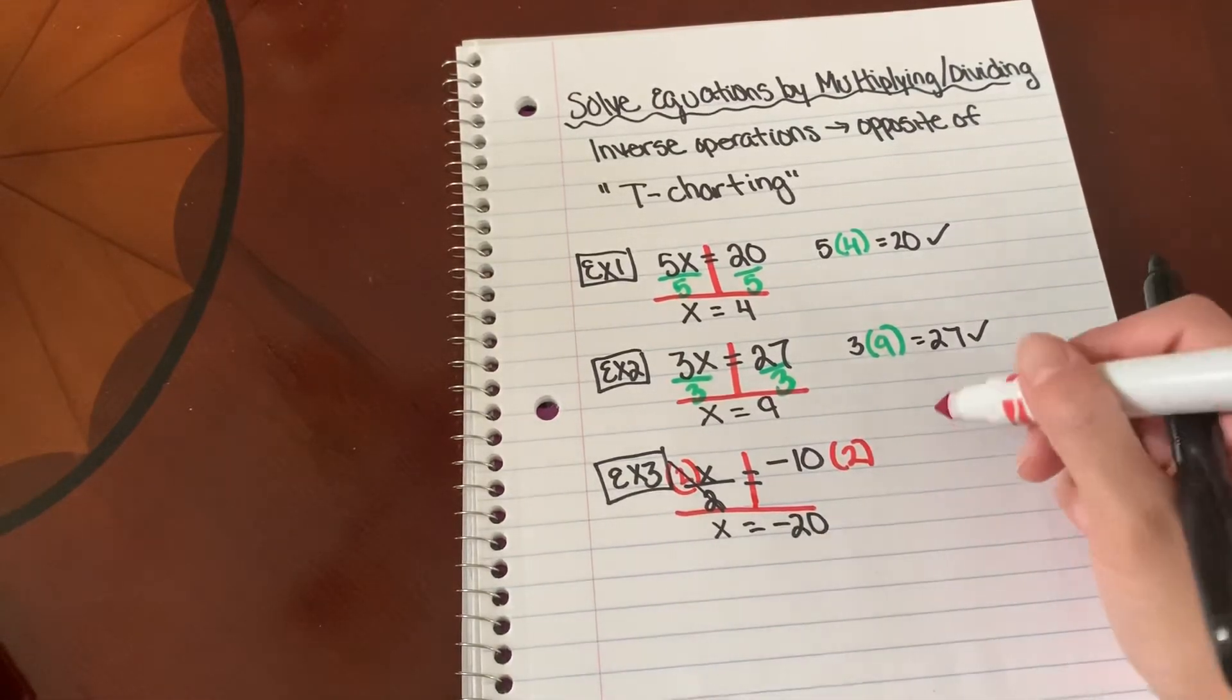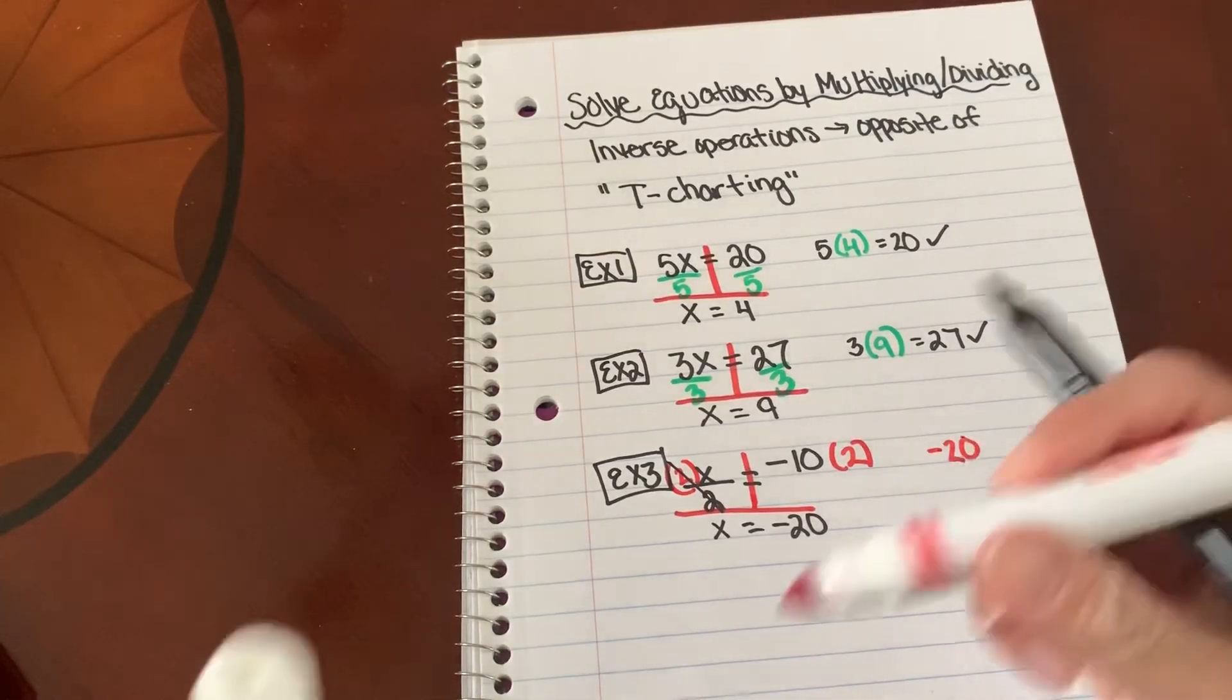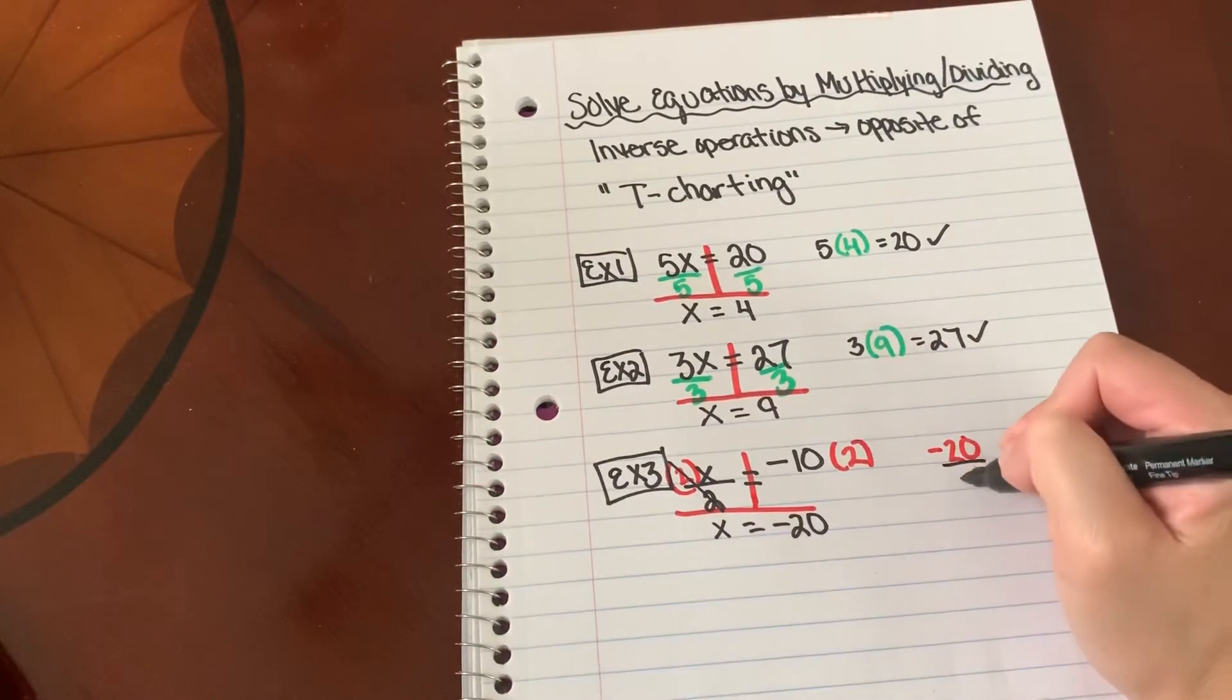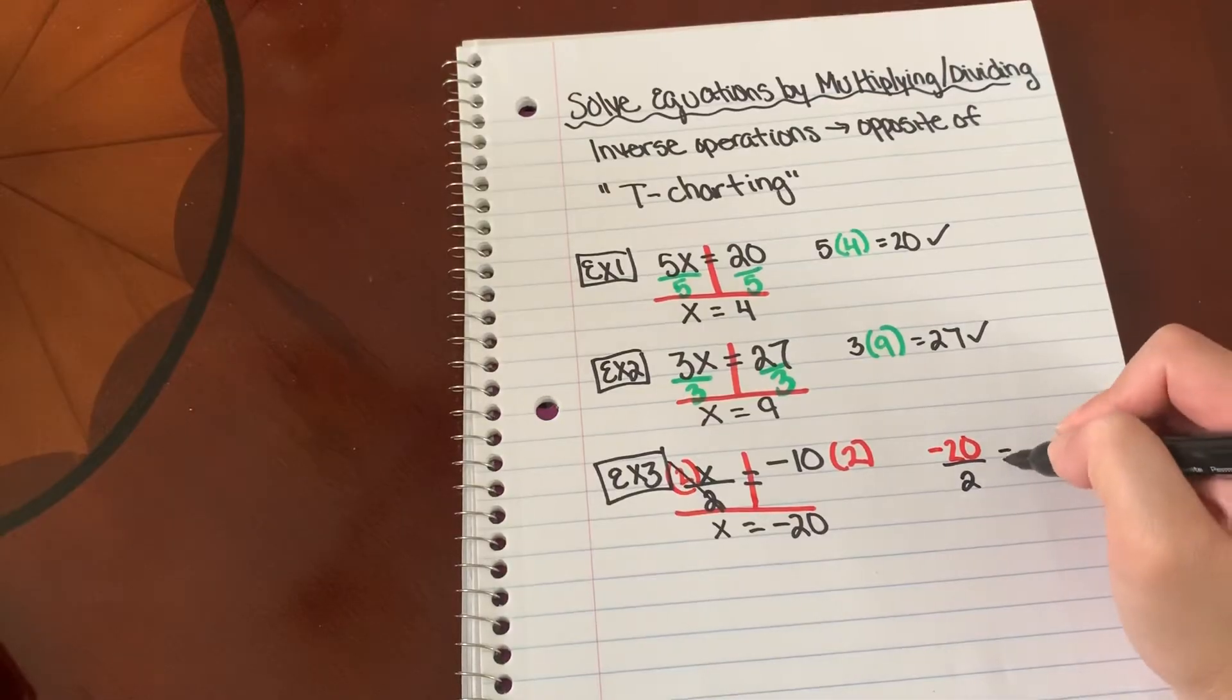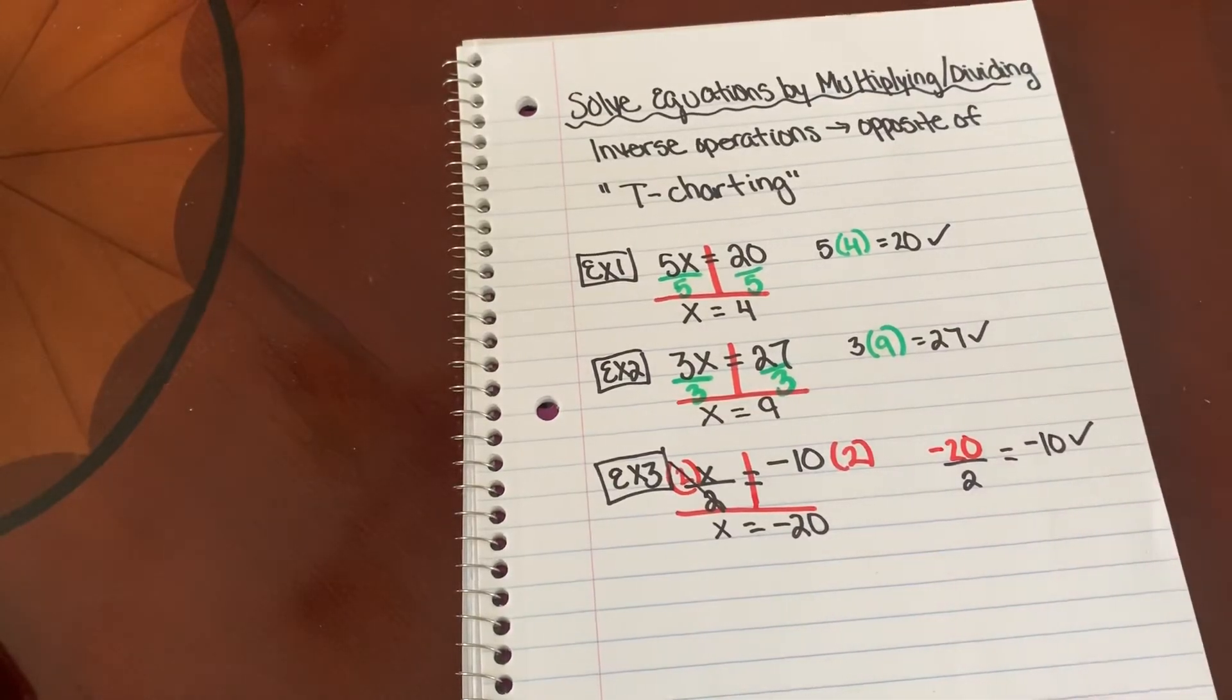And if you wanted to go ahead and check your answer, I'm going to plug negative 20 back into my original equation. What is negative 20 divided by 2? Does that equal negative 10? Yes, it does.